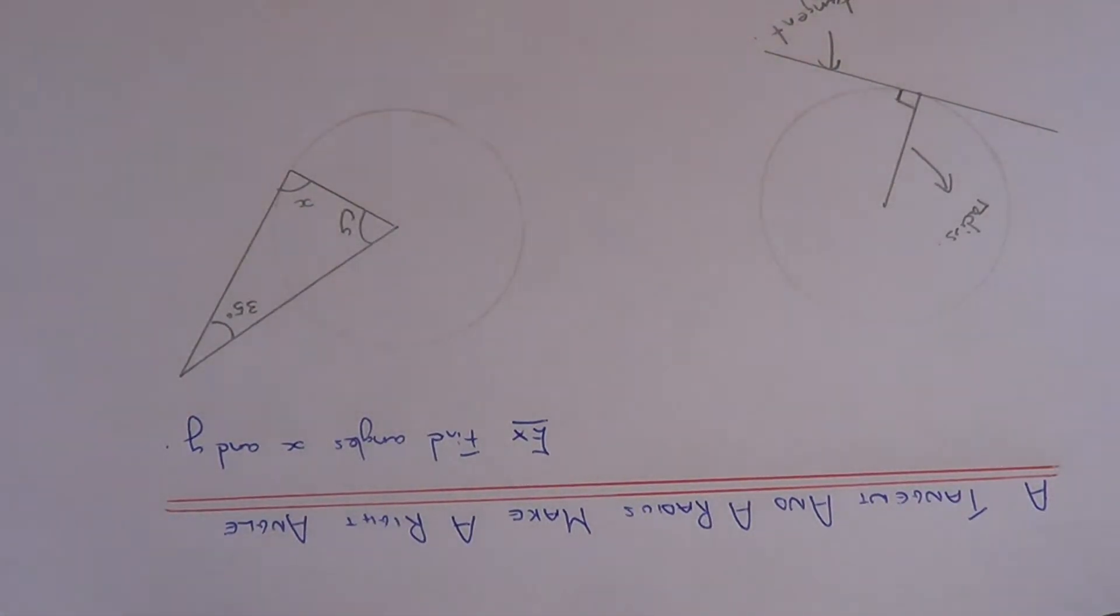So let's apply this circle theorem to the example which I have over here. We need to work out the angles x and y. Let's start with angle x first.